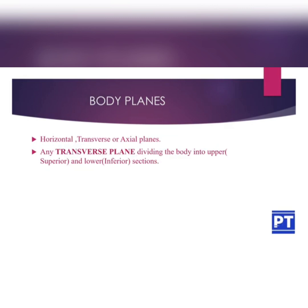The last plane is the transverse plane, which divides the body into upper (superior) and lower (inferior) sections. So the three planes are: the midsagittal plane dividing the body into equal right and left portions, the midcoronal plane dividing it into equal anterior and posterior sections, and the transverse plane dividing it into superior and inferior sections.